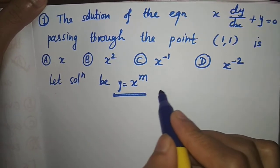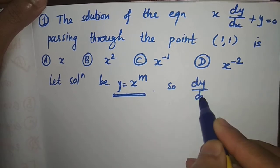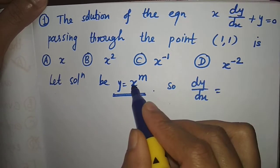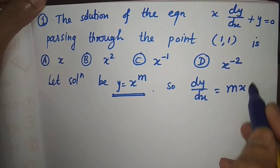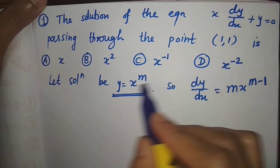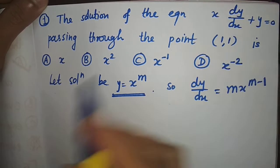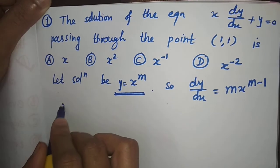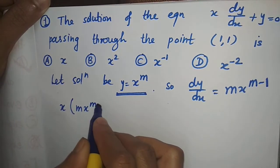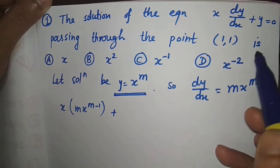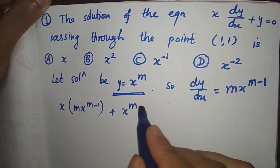You just put this y equal to x raised to m in the given equation. Find out dy by dx — the derivative of x raised to m is m into x raised to m minus 1. Now put this y and dy by dx in the above equation. We will get x into dy by dx is m into x raised to m minus 1, plus y is x raised to m, equated to 0.